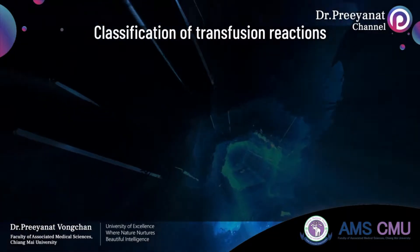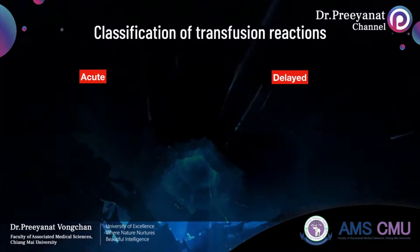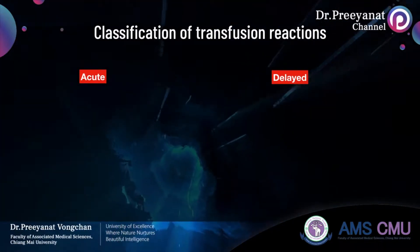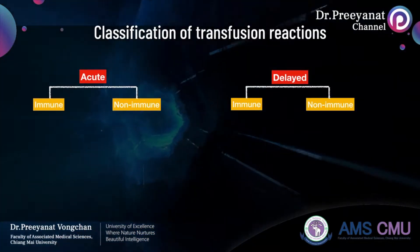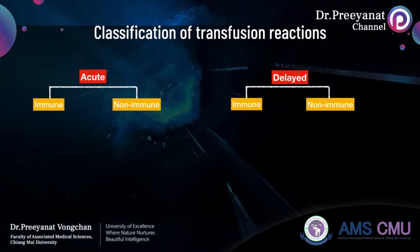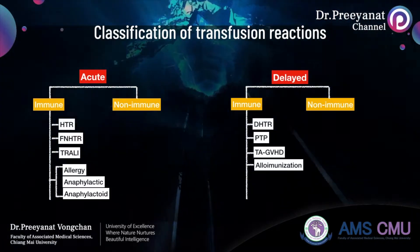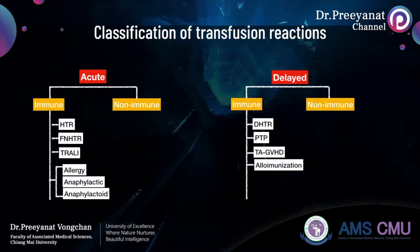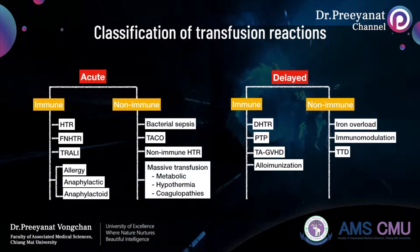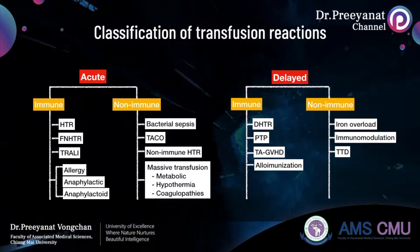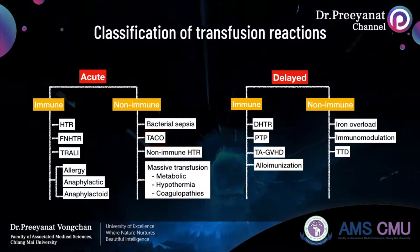Transfusion reactions can be classified into two main groups: acute and delayed, depending on the onset of the reaction. Both groups are also divided into immune and non-immune mediated based on causes. Immune mediated reactions mean that patients produce antibodies specific to red blood cells, white blood cells, platelets, or plasma, while non-immune mediated reactions are caused by other factors. TACO is classified as a non-immune mediated acute transfusion reaction.